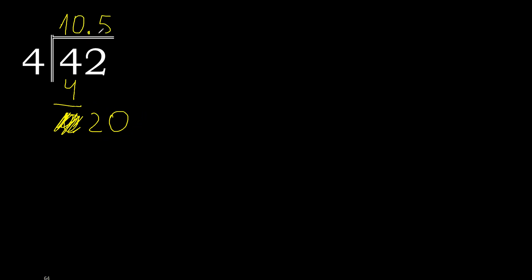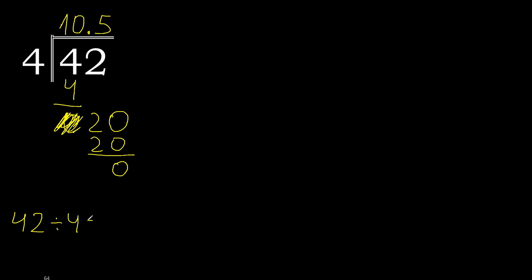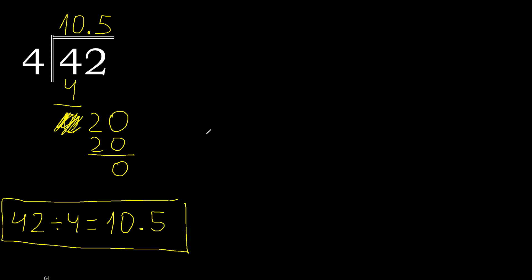4 multiply by 5 is 20 — not greater. 20 minus 20 is 0. Therefore finished. 42 divided by 4 is finished, giving 10.5.